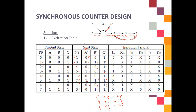1x is equal to x1. After you complete your excitation table, you proceed with the next step, which is simplifying the J and K.